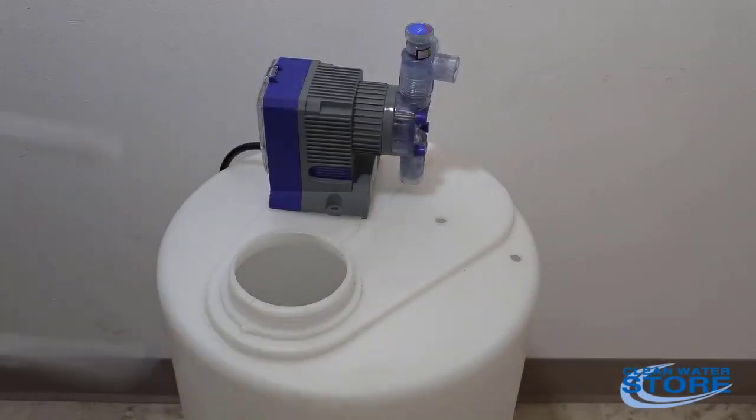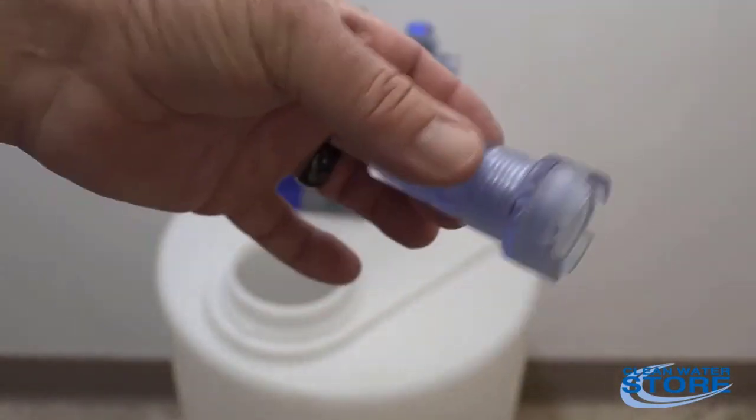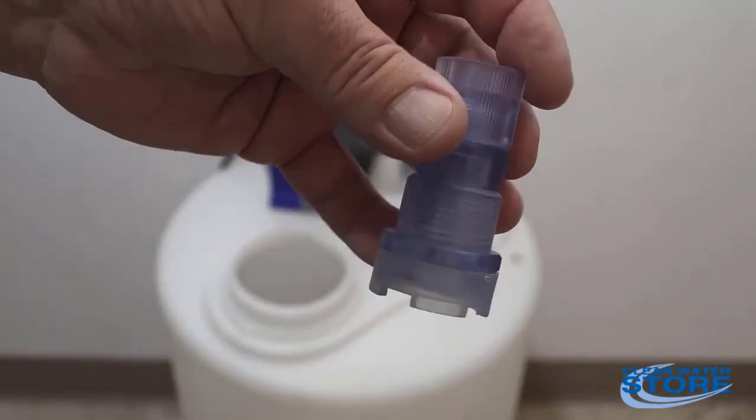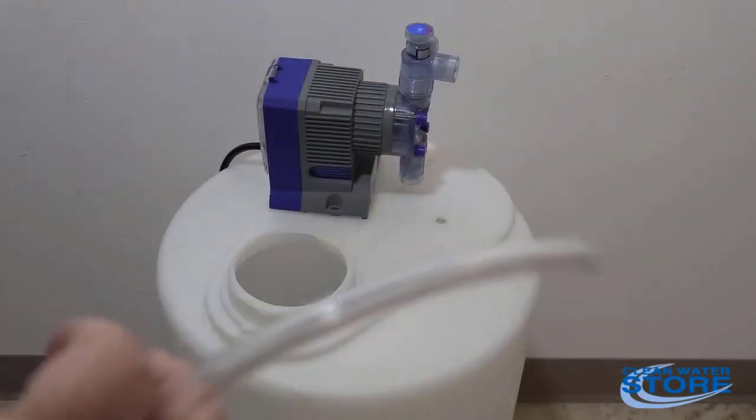Another important thing is that you want to make sure this is vertical. This foot valve has a check valve in here, and if it's off horizontal or to the side, it could not function properly and you won't keep your prime on the pump. So make sure this is vertical and use your soft tubing.